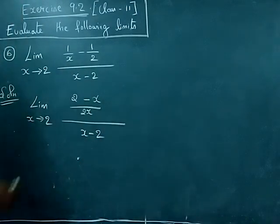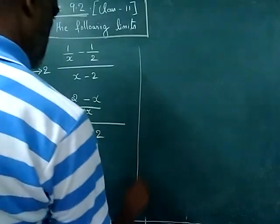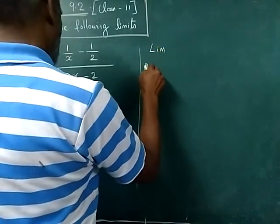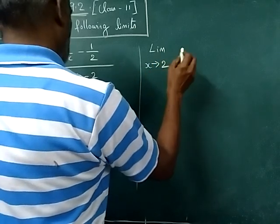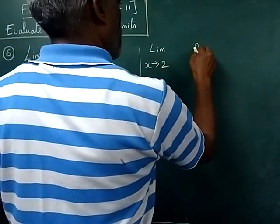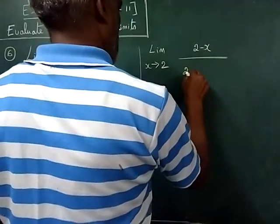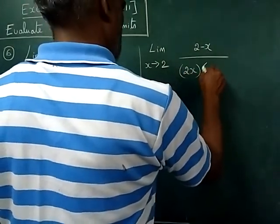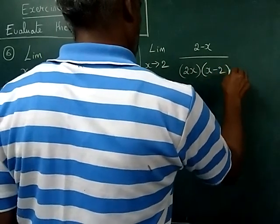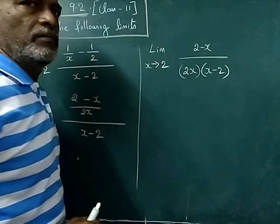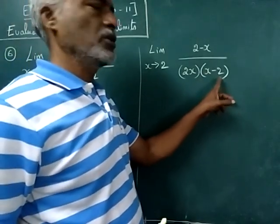Now this can be written as limit x tends to 2, 2 minus x divided by 2x into x minus 2. Now we have 2 minus x here, in the denominator we have x minus 2.